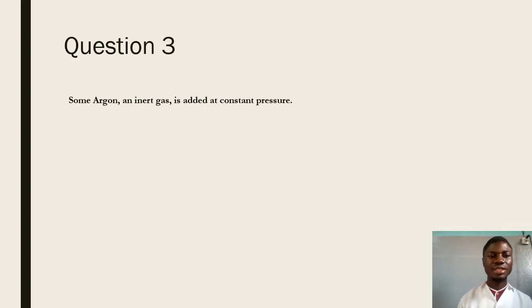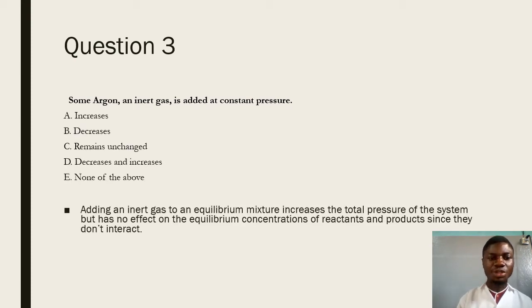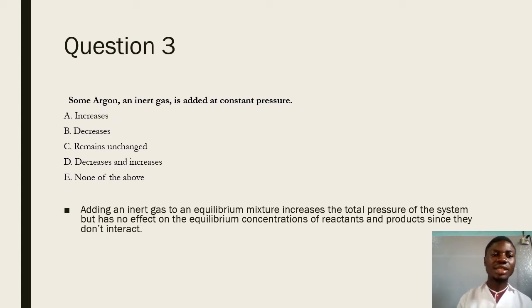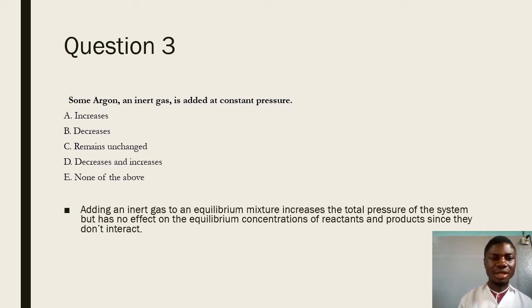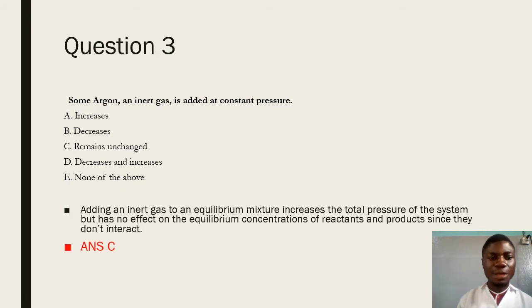Question 3 says some argon, an inert gas, is added at constant pressure. Adding an inert gas to an equilibrium mixture increases the total pressure of the system but has no effect on the equilibrium concentrations of reactants and products since they don't interact. Argon does not take part in chemical reactions, so introducing argon will just increase the pressure of the system with no change in concentration of either reactant or product. The answer is C because the equilibrium amount of sulfur trioxide is going to remain unchanged.